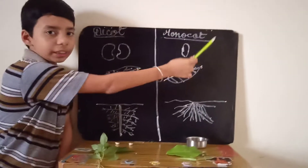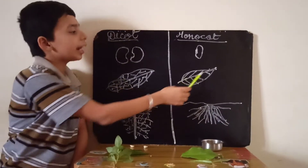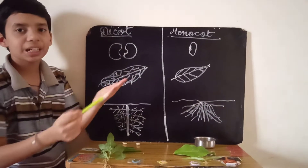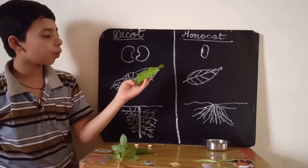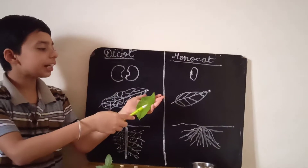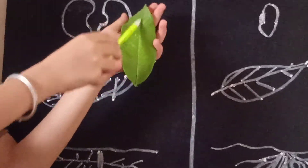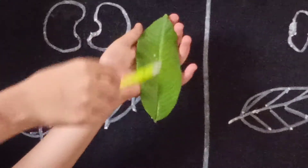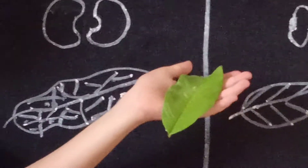Now I will explain how a monocotyledon plant's leaf will be. It will have some veins, but it will not have a netted-like structure. This is a bova — bova is also a monocot seed. Its leaf has simply parallel veins: one vein in the middle and one vein on each side. It does not have a netted-like structure.